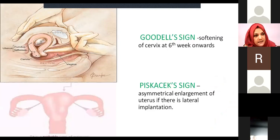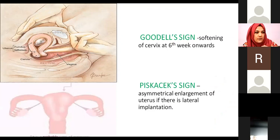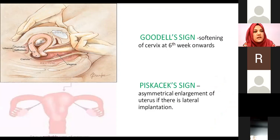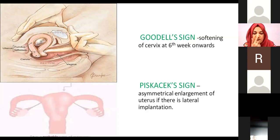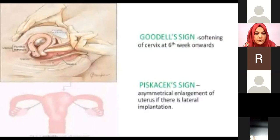The Goodell's sign follows a similar procedure: one hand is placed on the lower abdomen above the symphysis pubis and another hand is inserted inside the vagina to feel the softening of the cervix. In a non-pregnant uterus, the cervix feels like the tip of the nose — firm. In pregnancy, the cervix softens and feels like the lips. This is detectable from six weeks onward.